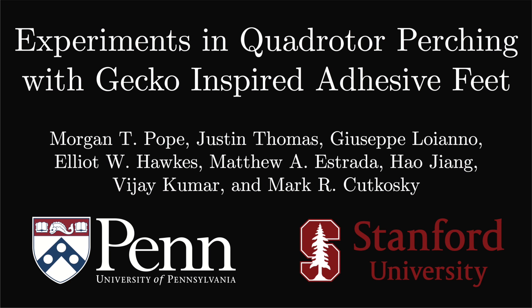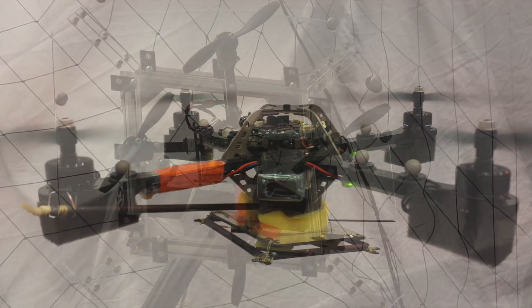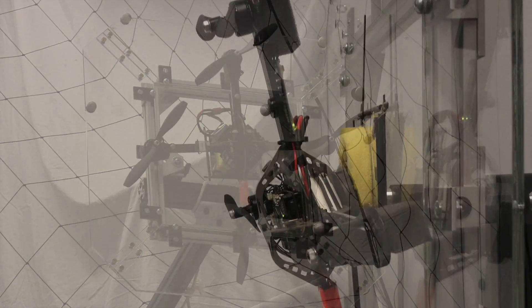In this work, the Grasp Lab at the University of Pennsylvania presents a collaborative project with Stanford University to give our quadrotors the ability to perch on smooth vertical surfaces such as windows.